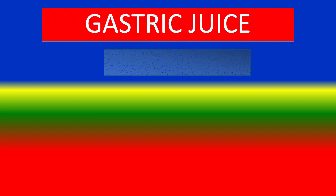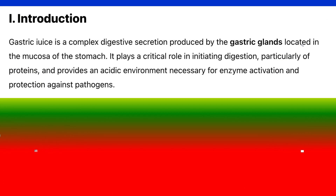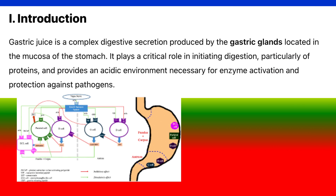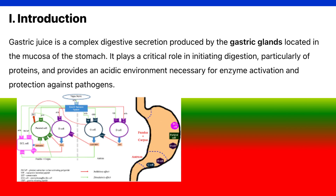Here's a detailed explanation of the physiology of gastric juice, covering its composition, functions, mechanism, and regulation of gastric secretion in depth. Gastric juice is a complex digestive secretion produced by the gastric glands located in the mucosa of the stomach. It plays a critical role in initiating digestion, particularly of proteins, and provides an acidic environment necessary for enzyme activation and protection against pathogens.